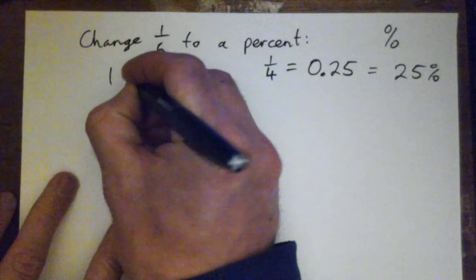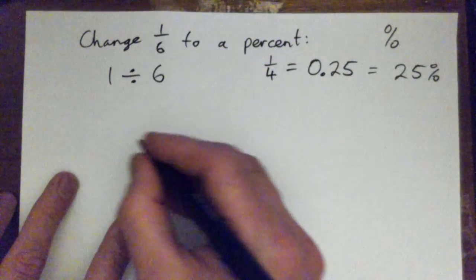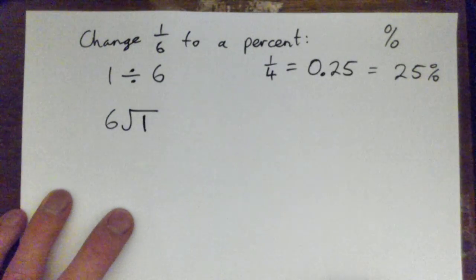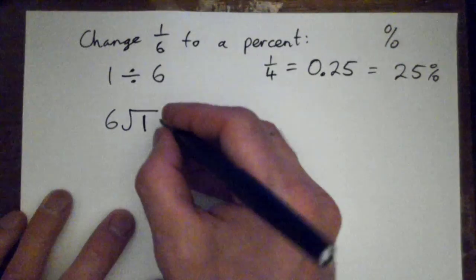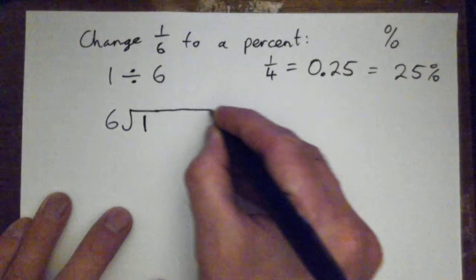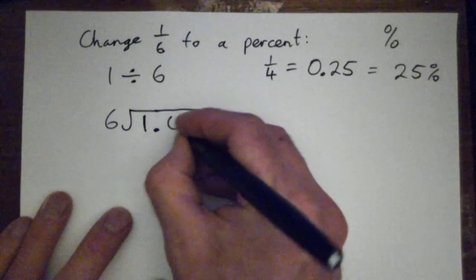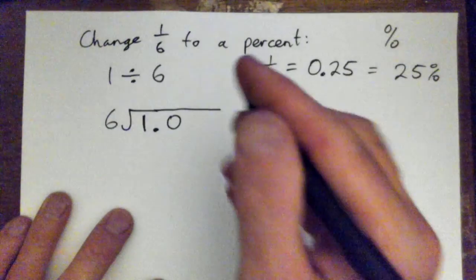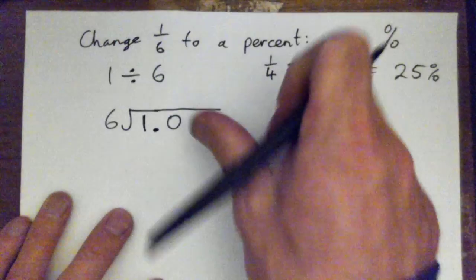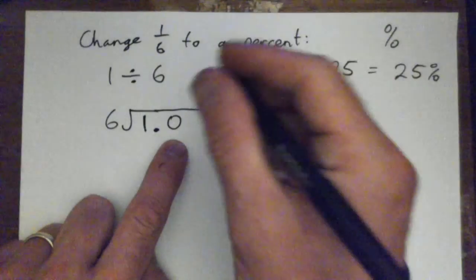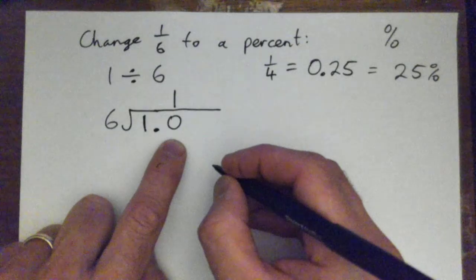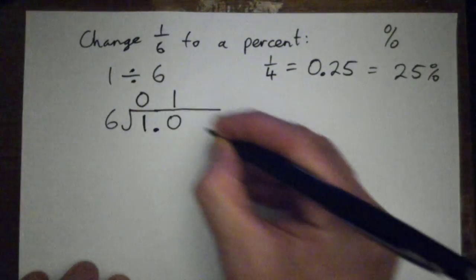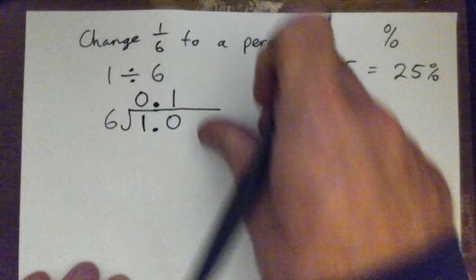One-sixth is one divided by six. So what we do is we divide — we go six into one, to get that as a decimal. We can do long division. It's hard to do six into one, so how about six into 1.0? We can put a whole bunch of zeros in a row. Six into ten goes one time. It'd be even better if we said six into one goes zero times — bring this decimal point up — and then six into ten goes one time.